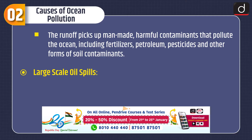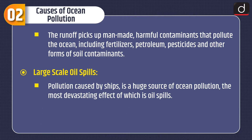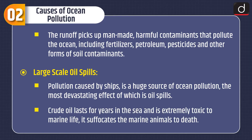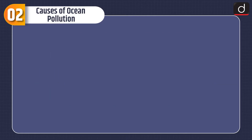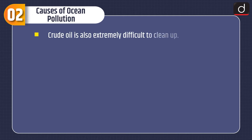Fourth is large-scale oil spills. Pollution caused by ships is a huge source of ocean pollution, the most devastating effect of which is oil spills. Crude oil lasts for years in the sea and is extremely toxic to marine life. It suffocates marine animals to death and is also extremely difficult to clean up.